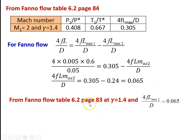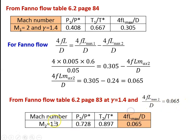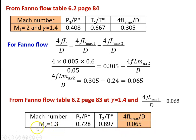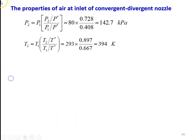From the fanno flow table, table number 6.2, page number 83, for gamma equal to 1.4 and 4FL max by D equal to 0.065, we take M2 equal to 1.3, P2 by P star equal to 0.728, T2 by T star equal to 0.897. This is directly available in the gas tables. The exit Mach number is 1.3. Then: P2 equal to P1 into (P2 by P star) divided by (P1 by P star), equal to 80 into 0.728 divided by 0.408, equal to 142.7 kPa. T2 equal to 293 into 0.897 divided by 0.667, equal to 394 Kelvin.